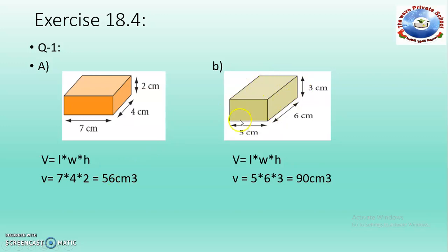Same like that, part B: 5 cm is the length, 6 cm is the width and 3 cm is the height of the cuboid. Just multiply 5 × 6 × 3 and it will be equal to 90 cubic centimeters. This is the volume of the cuboid.